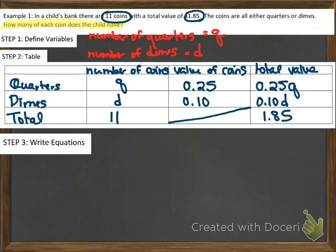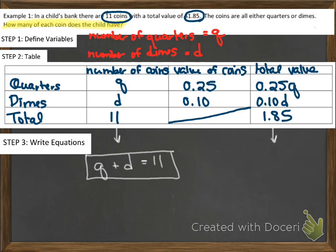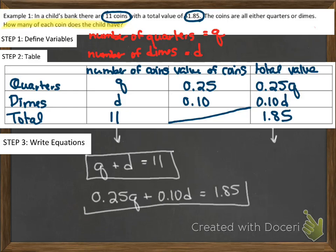You might wonder, is it really necessary to set up this table? The reason I teach it this way is because if you set up your table properly, the equations just fall out of it. Our first equation comes from the number column: the number of quarters plus the number of dimes equals 11, so Q + D = 11. Then from the value column: 0.25Q + 0.10D = 1.85. Now we have two equations and two variables and can use either substitution or elimination to solve them.